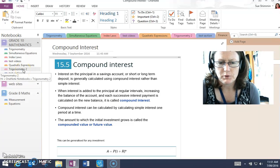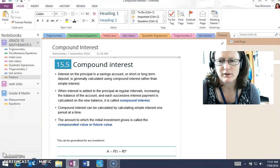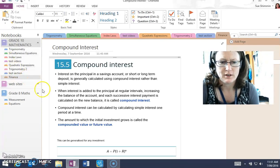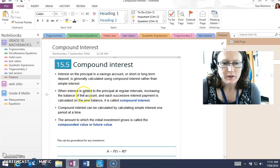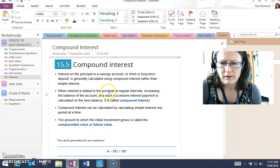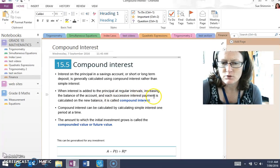Interest on the principal in a savings account or long-term deposit is generally calculated using compound interest rather than simple interest. Compound interest is when interest is added to the principal at regular intervals, increasing the balance of the account, and each successive interest payment is calculated on the new balance.